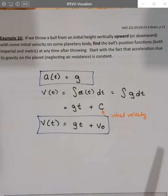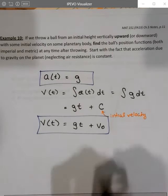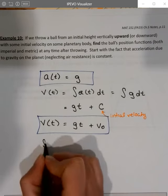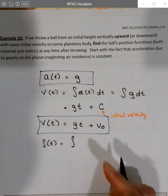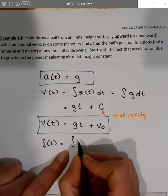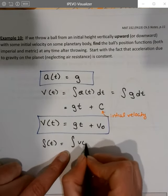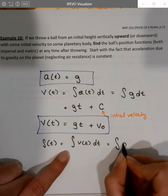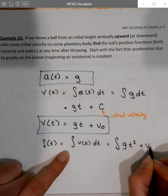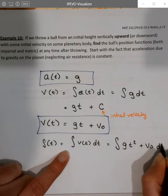Then I can also talk about its position. So its position, that's supposed to be an s, it looks a little like an integral symbol. The s position is the integral of velocity dt, and so that's the integral of gt plus v naught dt.